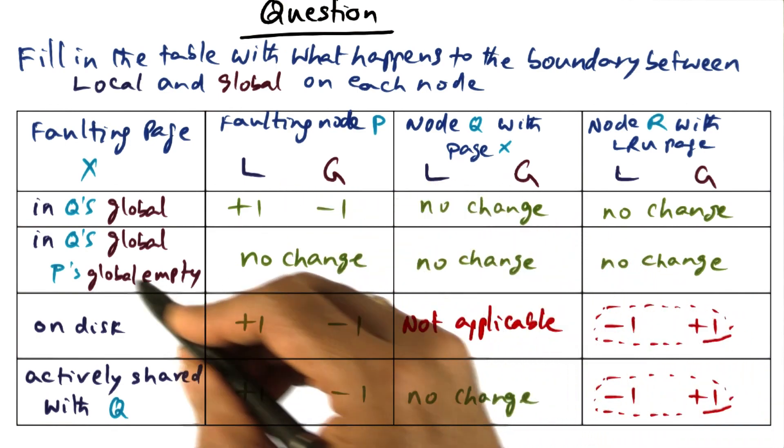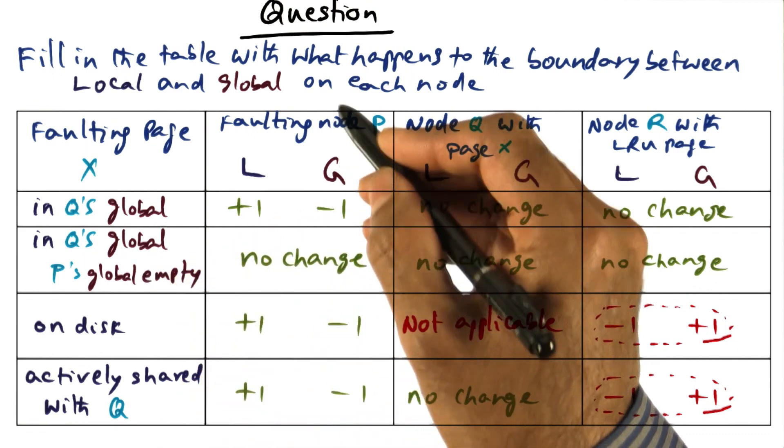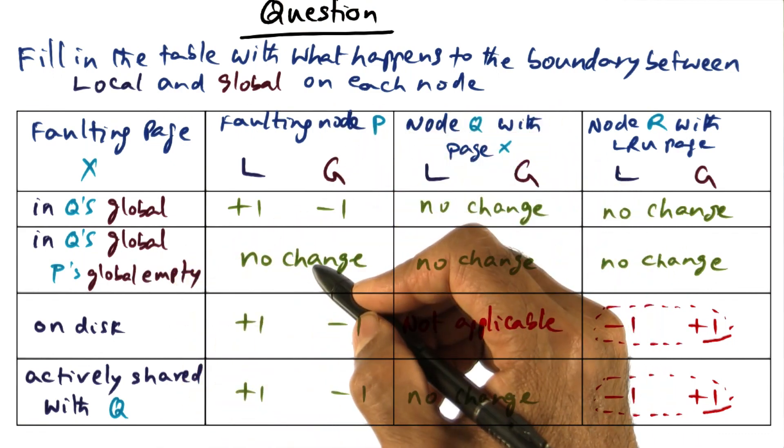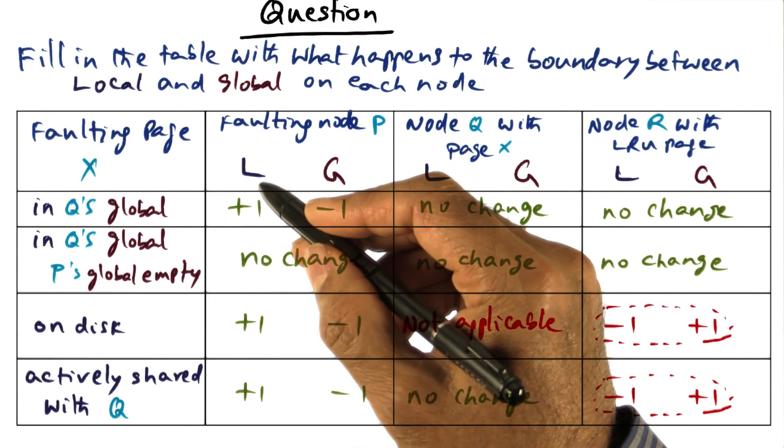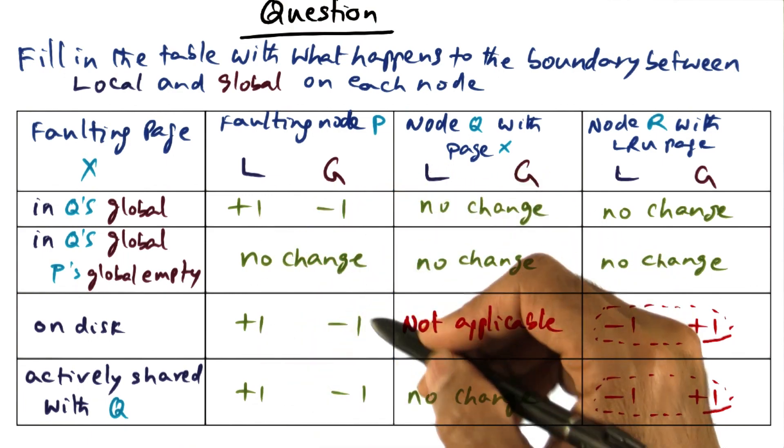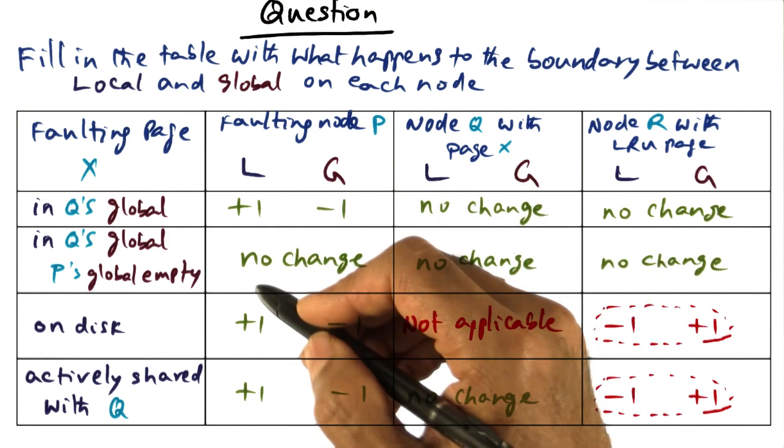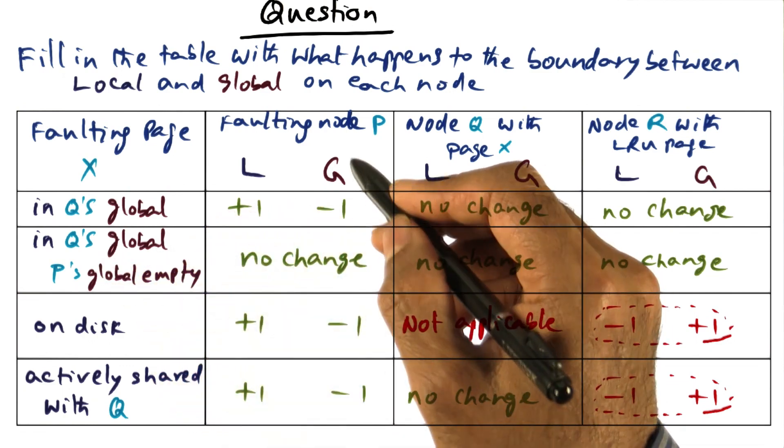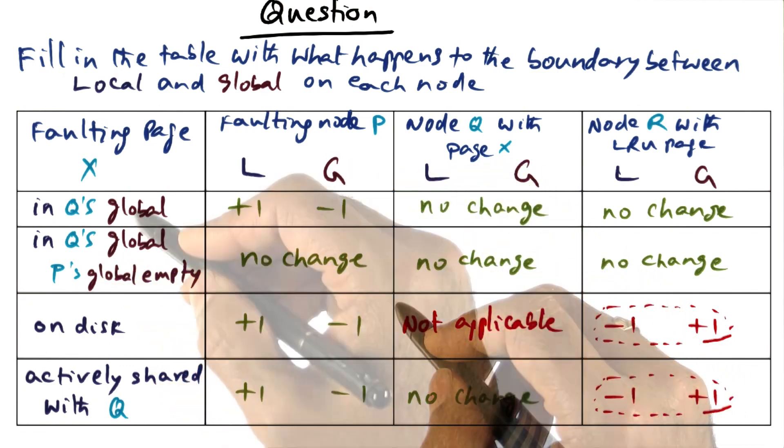In all cases except this, where the global part of the faulting node's page cache is empty, the local part is going to go up by one. The global part is going to come down by one. Only when the global part is empty already, there is no change.